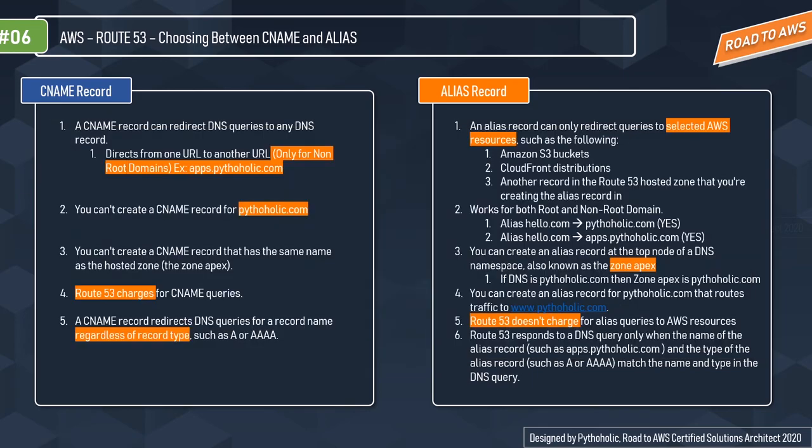You can create a CNAME record for a non-root domain but you cannot create a CNAME record that has the same name as the hosted zone — the zone apex, which is your root domain. So you cannot create a CNAME for pytholic.com itself, but you can create one for subdomains like apps.pytholic.com or stage.apps.pytholic.com.